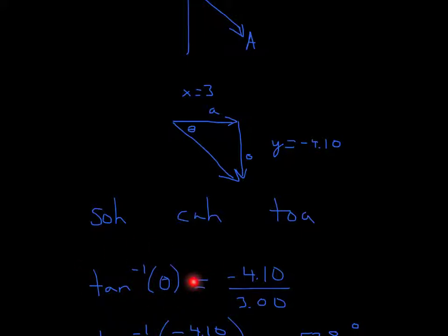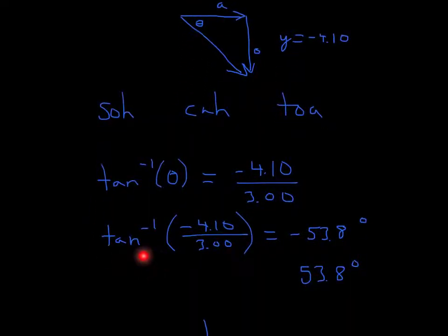So here's what we do. We do arctangent of the angle equals opposite over adjacent. And we can just plug those terms in. In the calculator, this is how it will appear. You do arctangent, and then you plug in the number, and you'll get negative 53.8 if you use this negative.